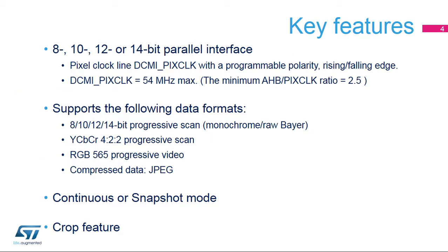The camera interface has a configurable parallel data interface from 8 to 14 data lines, together with a pixel clock line, DCMI PixClock, with a programmable polarity and rising and falling edge configuration. The maximum DCMI PixClock is 54 MHz. DCMI PixClock and AHB clock must respect the minimum ratio AHB PixClock of 2.5.